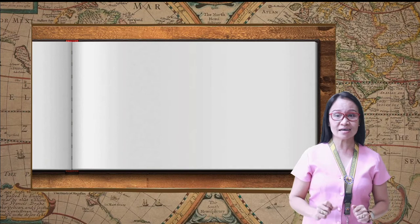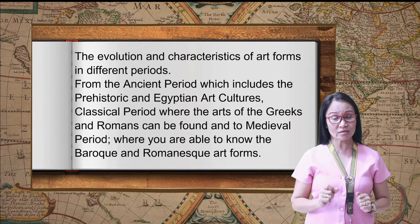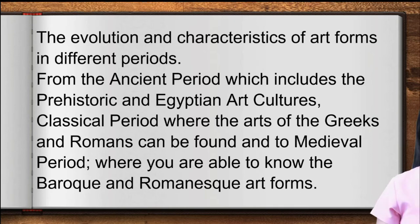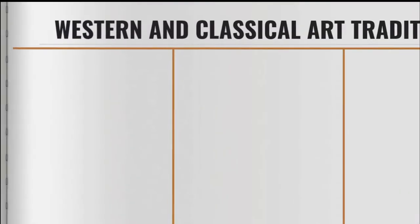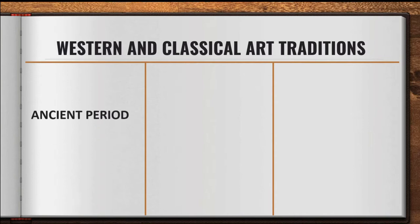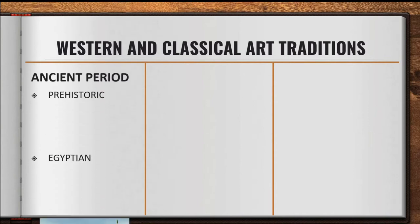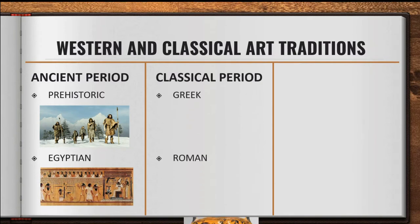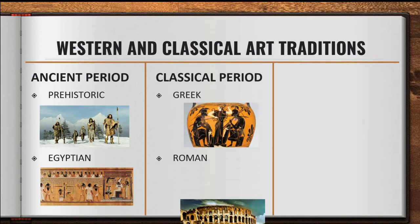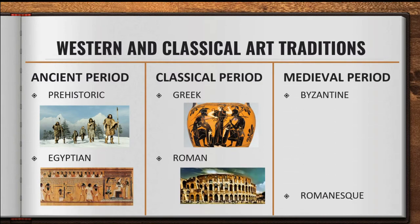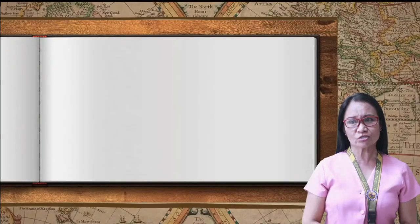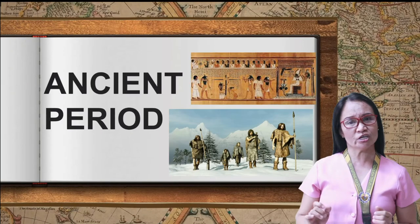We are going to discuss the evolution and characteristics of art forms in different periods — from the ancient period, which includes the prehistoric and Egyptian art cultures; the classical period, where the arts of the Greeks and Romans can be found; and the medieval period. Let's start with the ancient period.